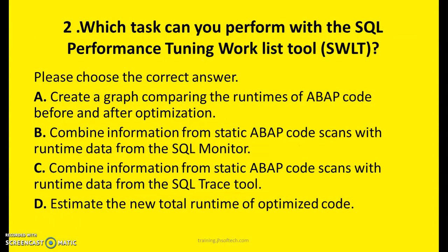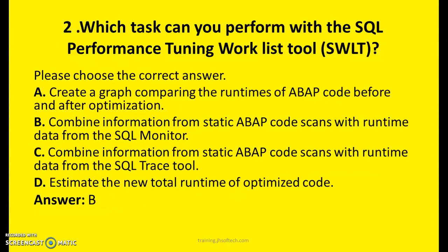Question Two: Which task can you perform with the SQL Performance Tuning Worklist tool SWLT? Choose the correct answer. A: Create a graph comparing the runtimes of ABAP code before and after optimization. B: Combine information from static ABAP code scans with runtime data from the SQL Monitor. C: Combine information from static ABAP code scans with runtime data from the SQL Trace tool. D: Estimate the new total runtime of optimized code. The answer is B — Combine information from static ABAP code scans with runtime data from the SQL Monitor.